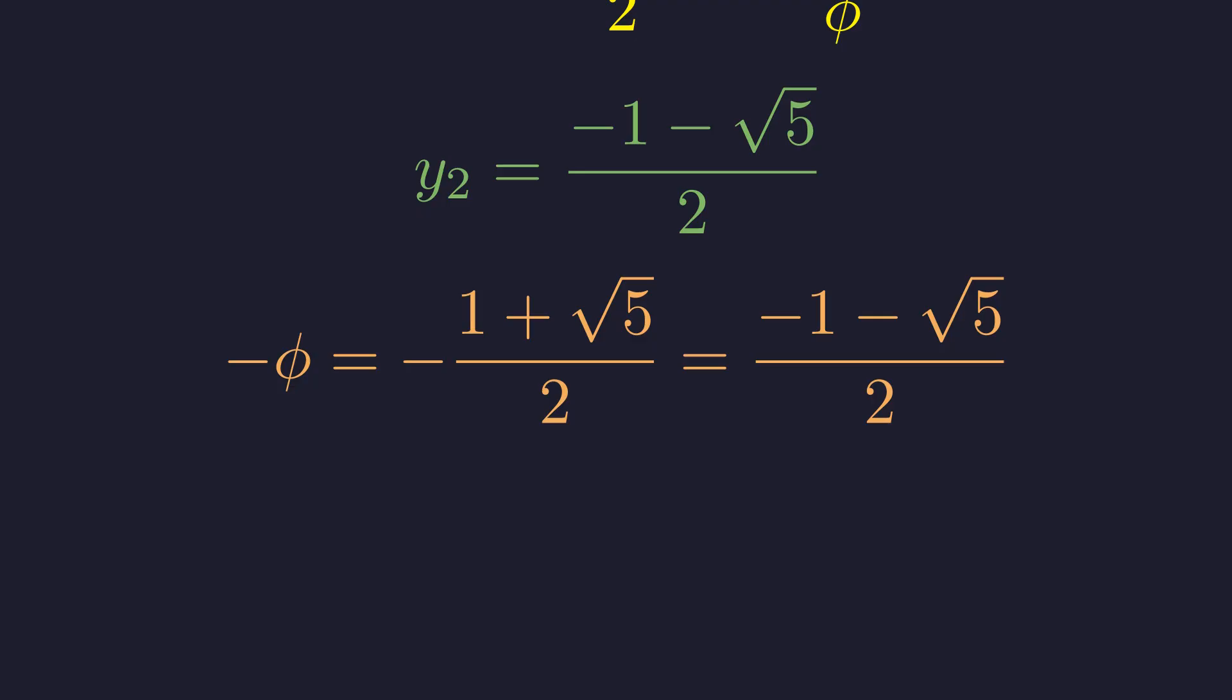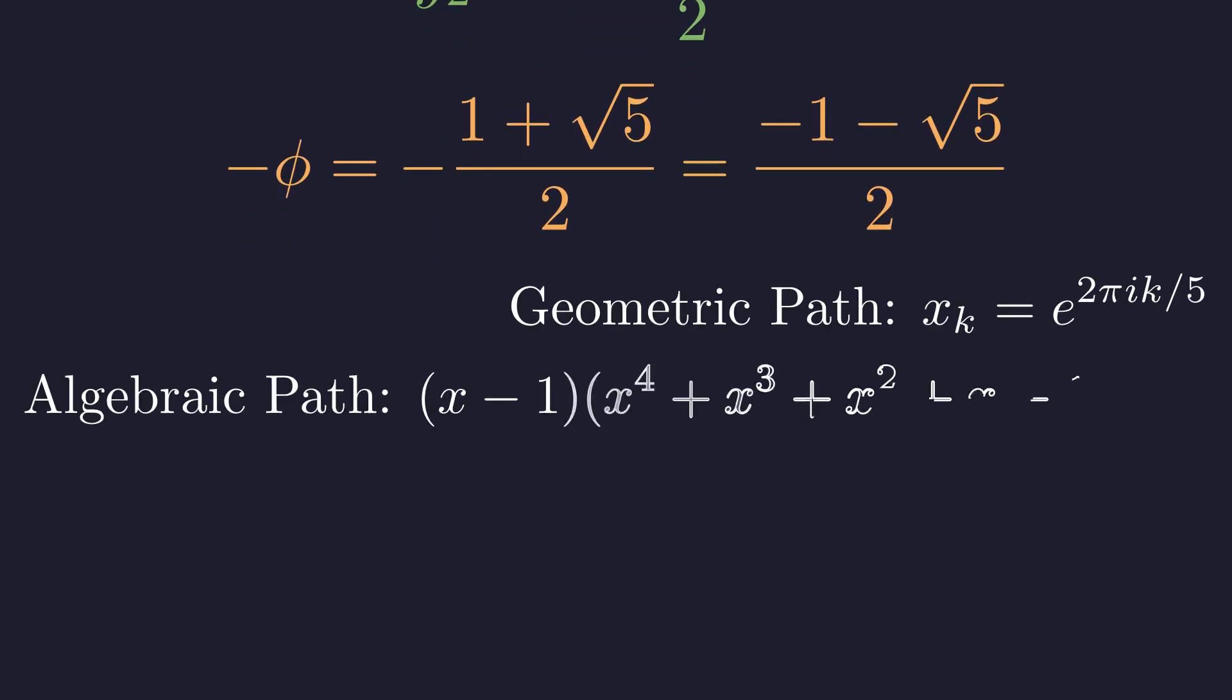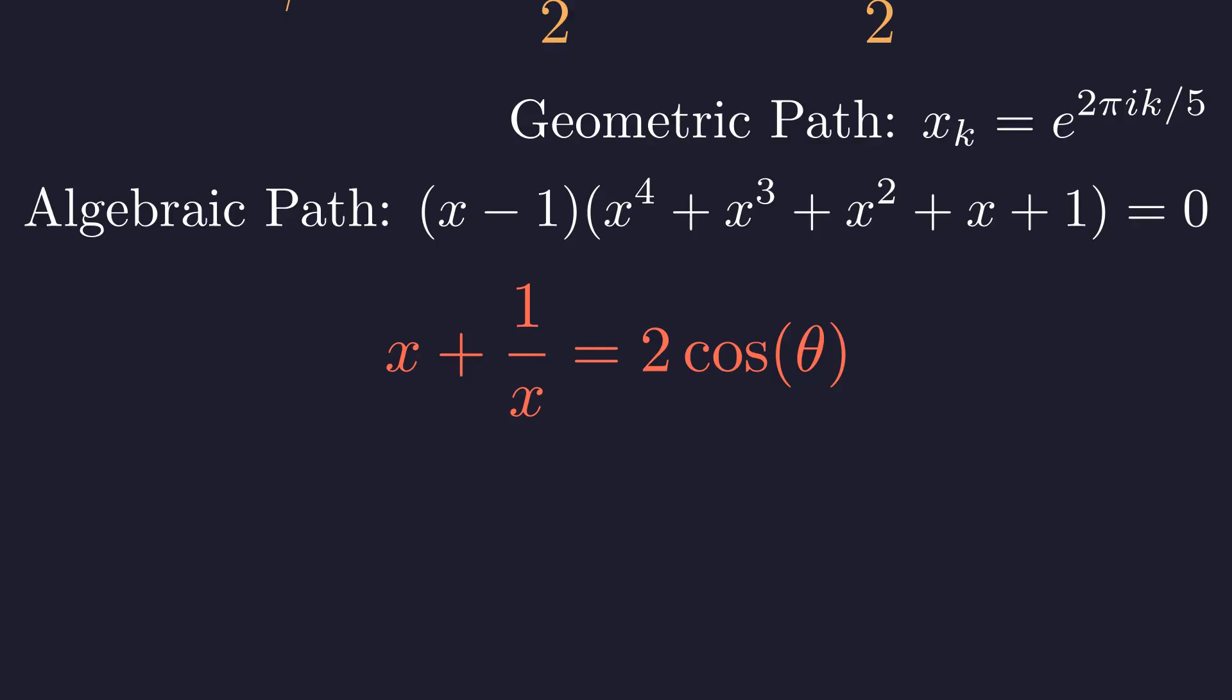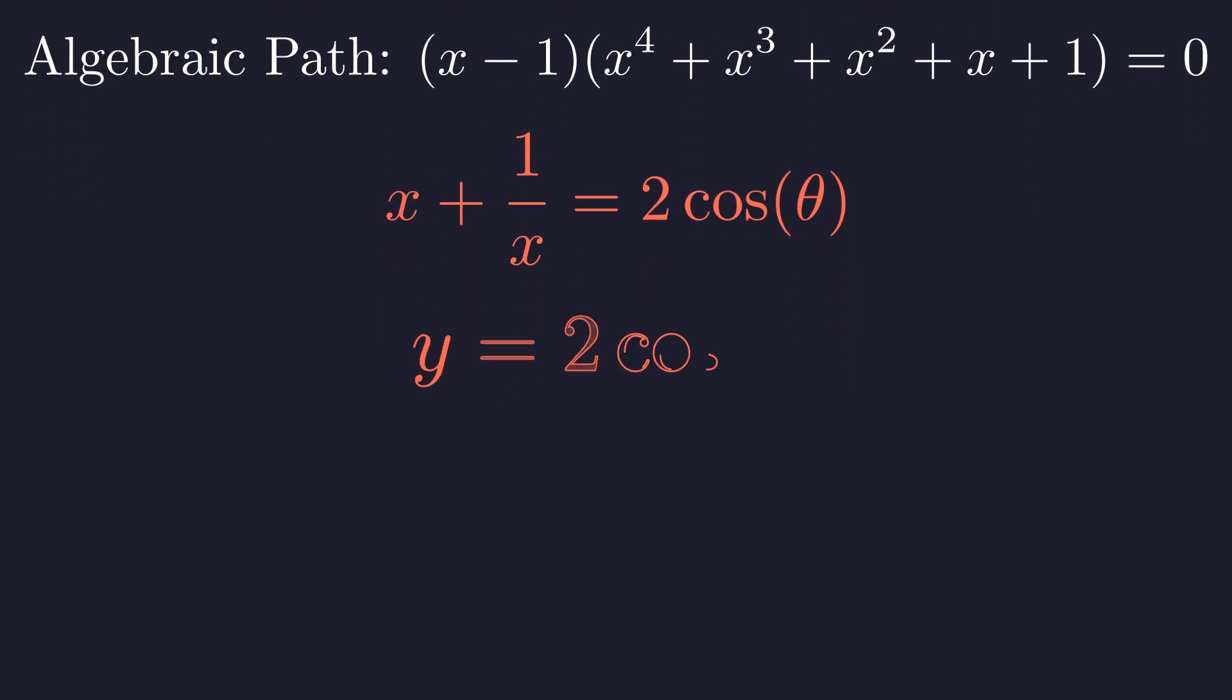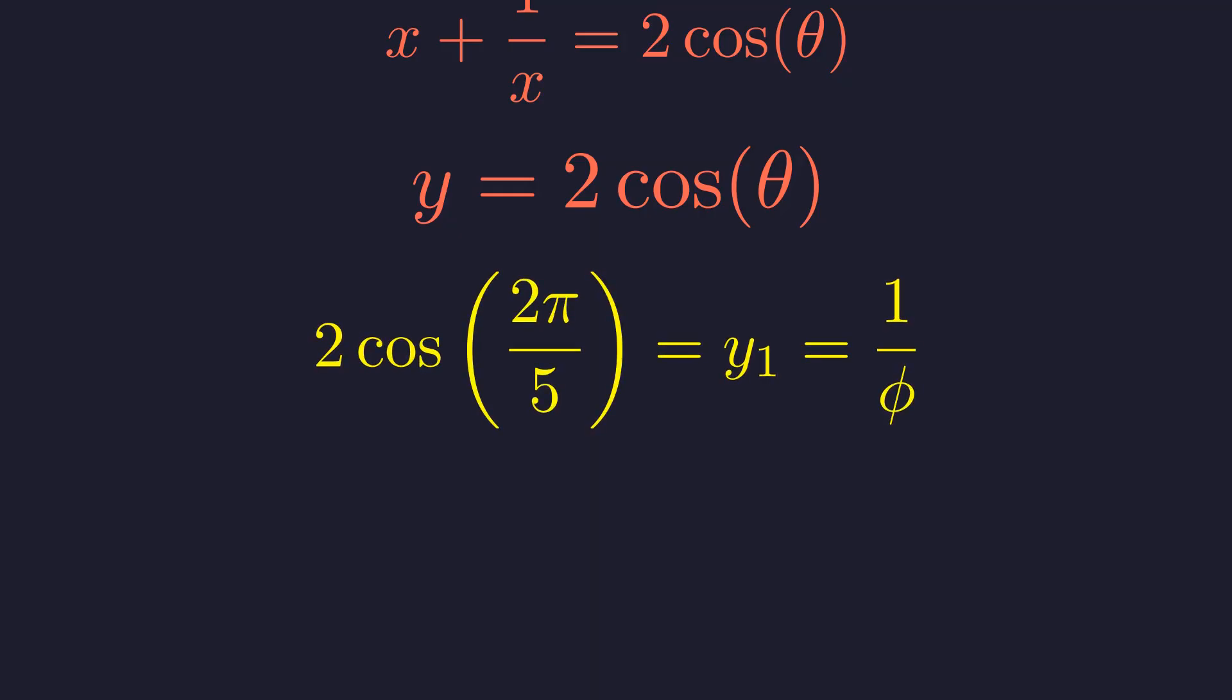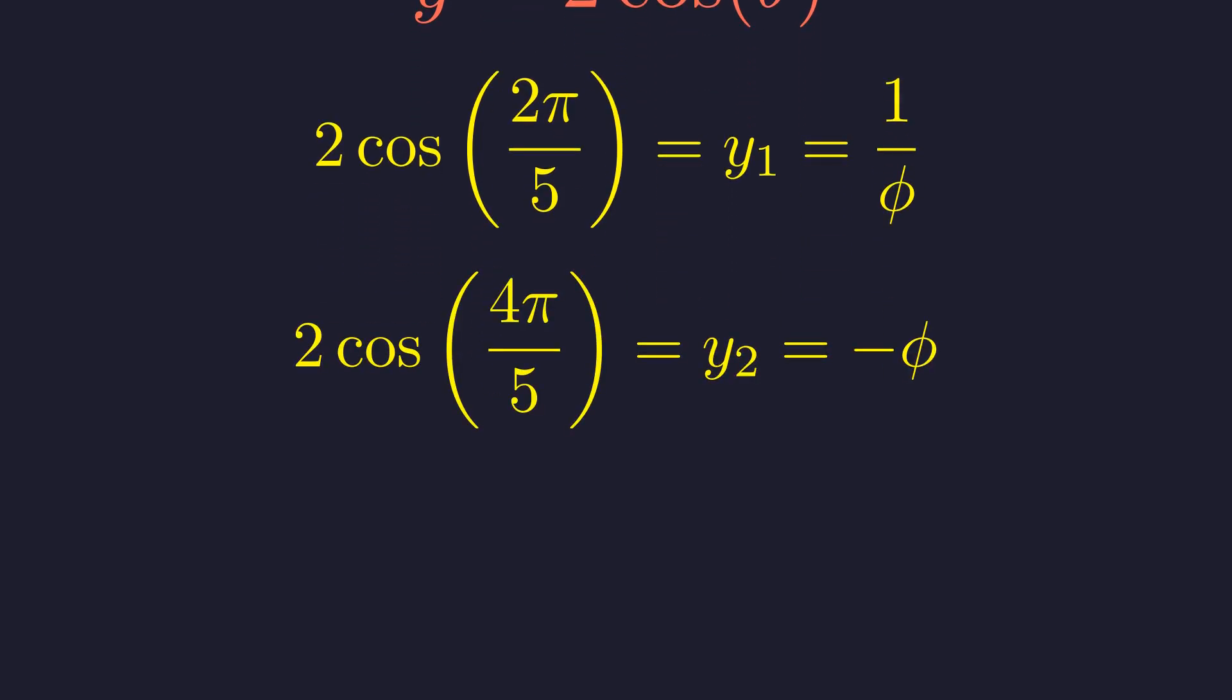Two completely different approaches, yet they reveal the same profound truth. Now let's see the magic that connects them. Here's the bridge. For any point on the unit circle, x equals e to the i theta and the sum x plus 1 over x equals 2 times the cosine of theta. This comes from Euler's formula. Since x plus 1 over x is our substitution variable y, we have the connection. So y equals 2 times the cosine of the angle. This connects our algebra back to the geometry. This means 2 times the cosine of 72 degrees is the reciprocal of the golden ratio. And 2 times the cosine of 144 degrees is negative phi. The symmetry is absolute.